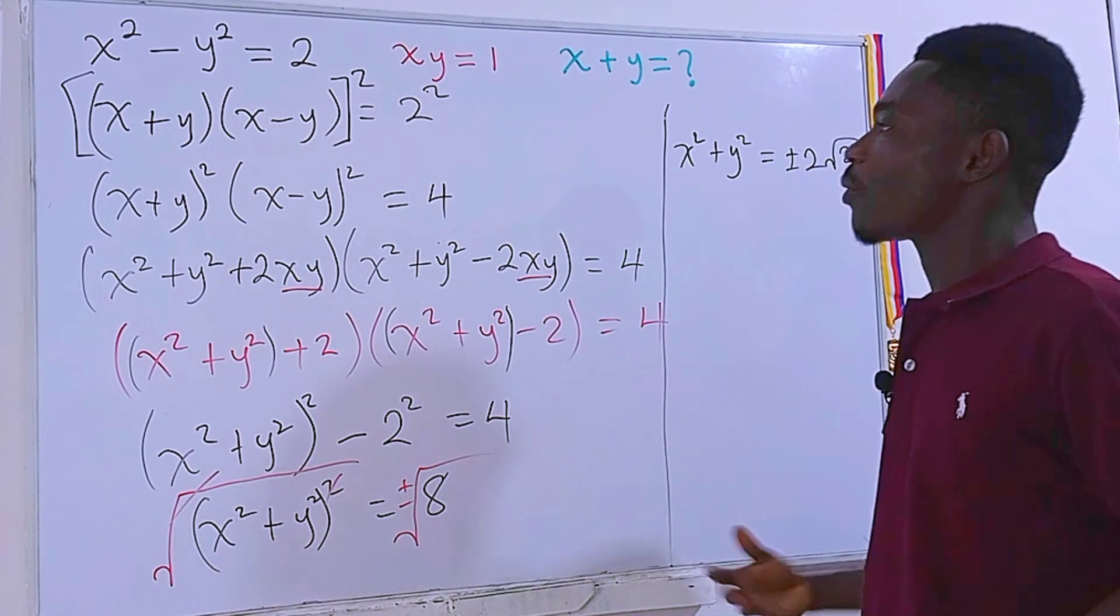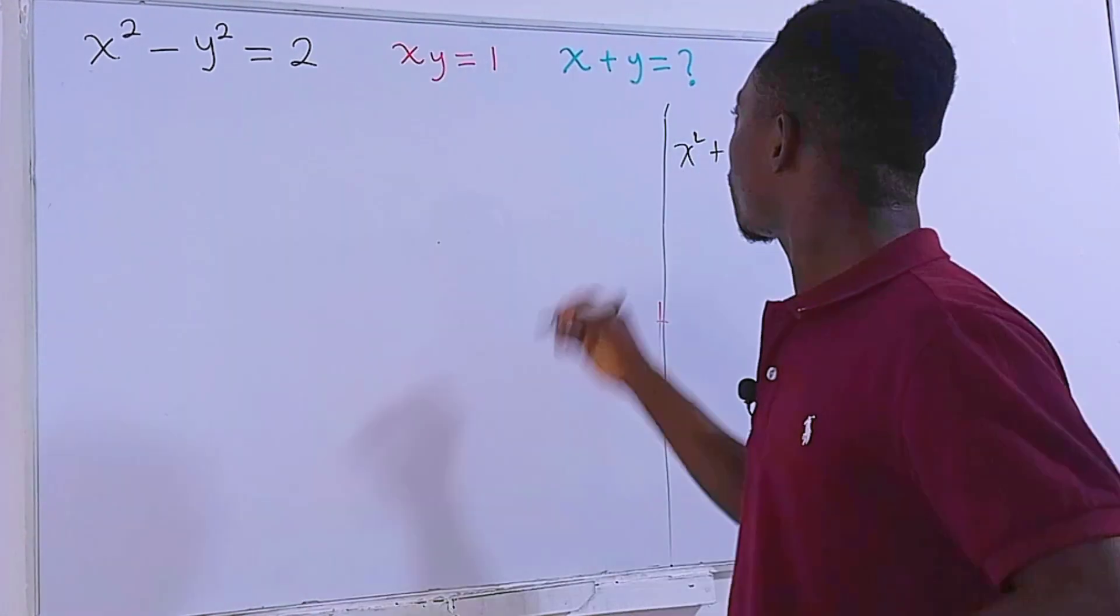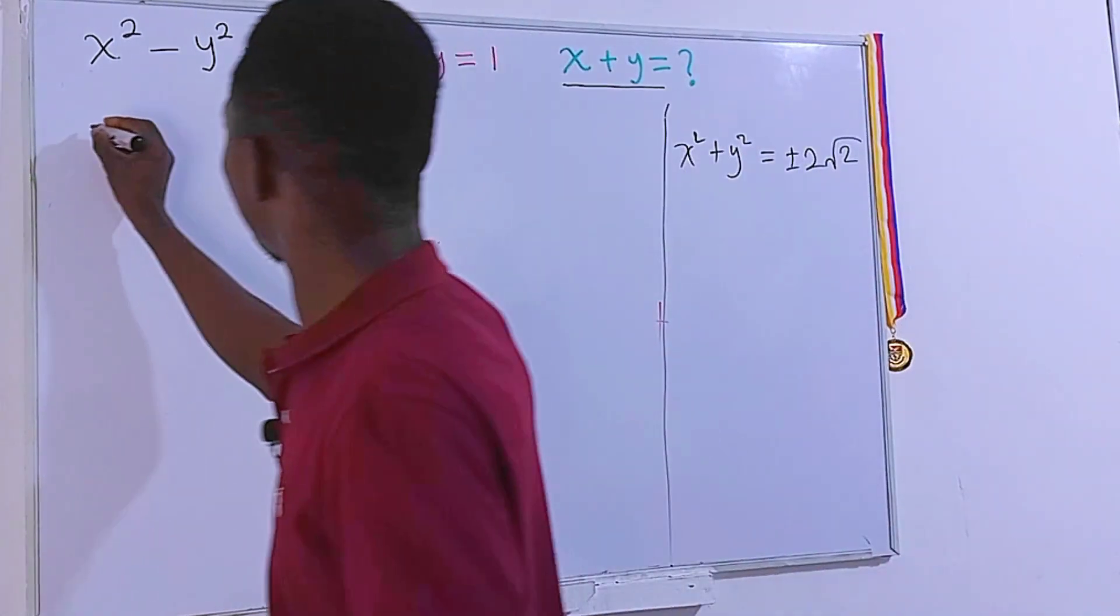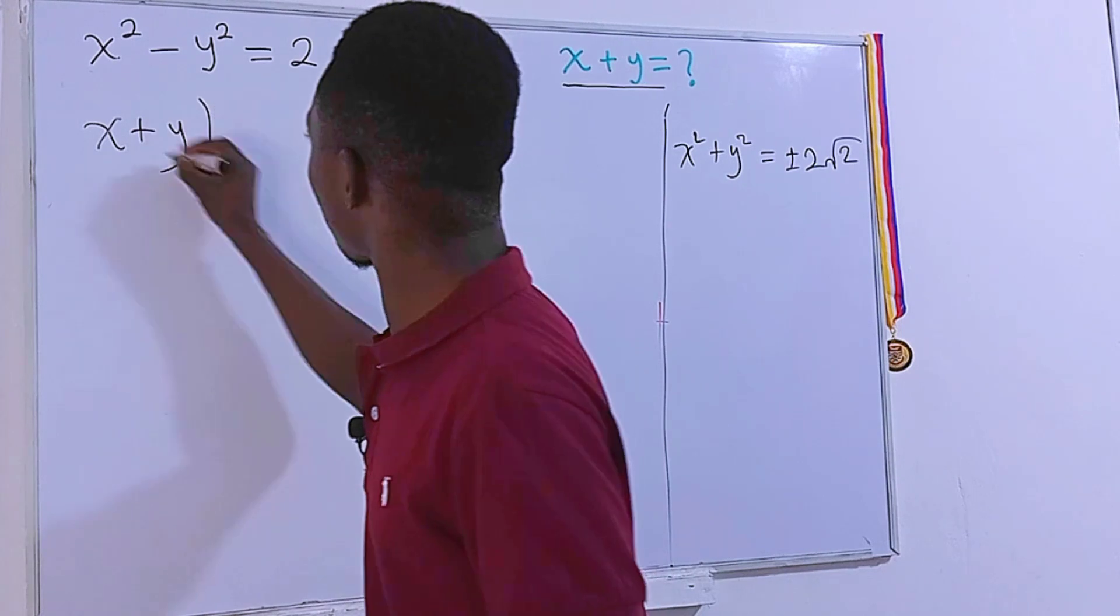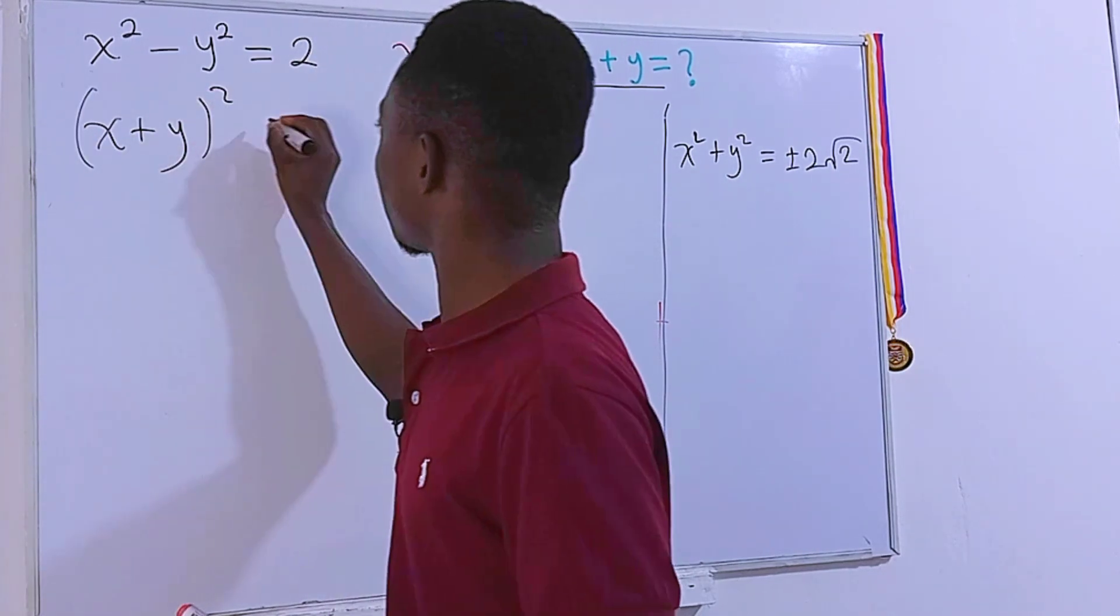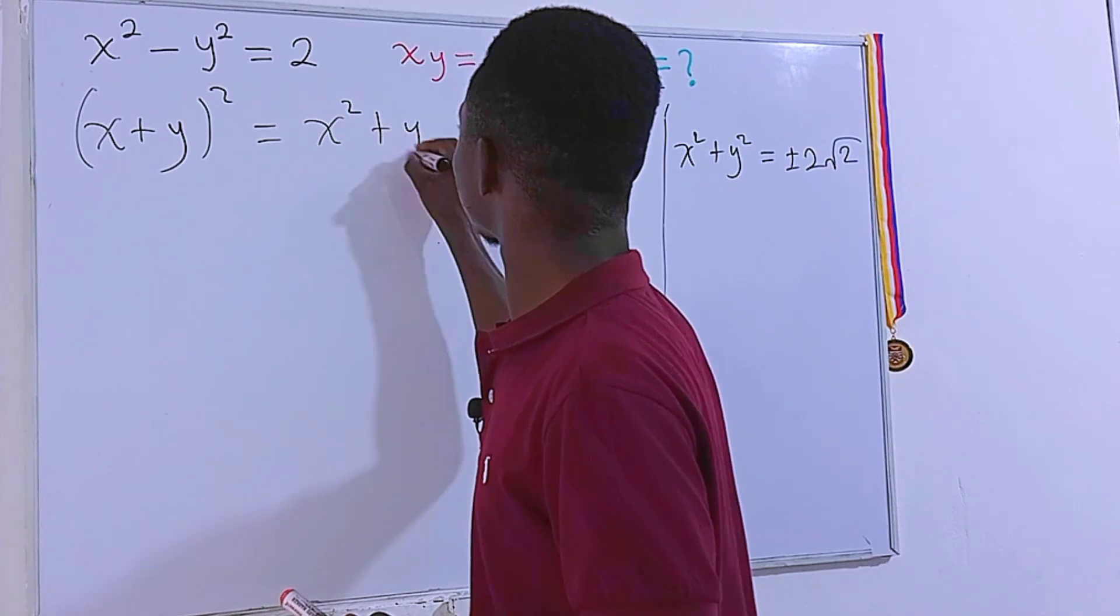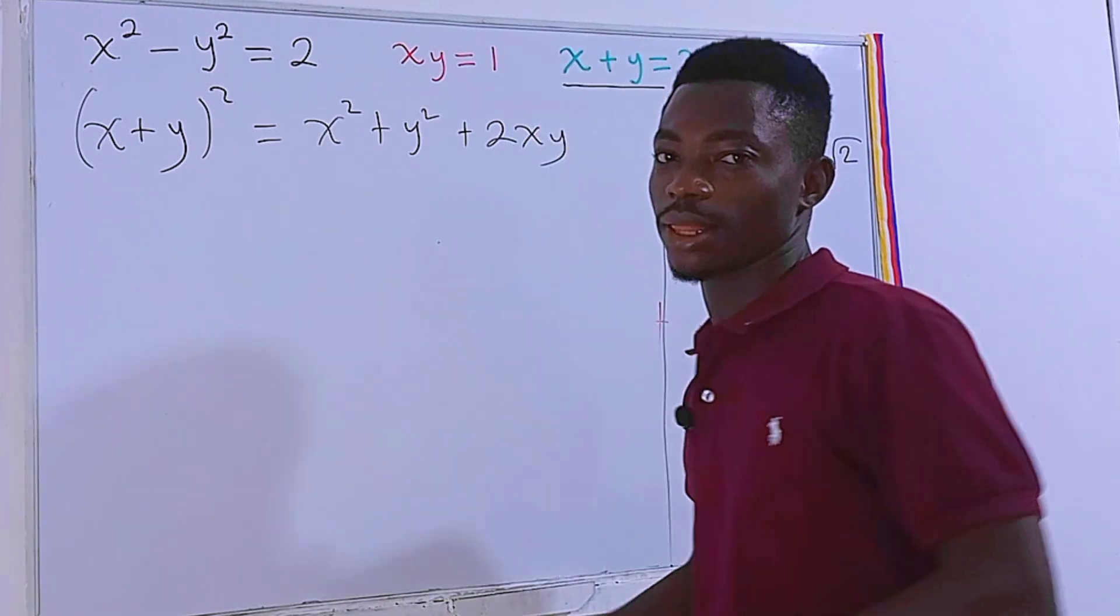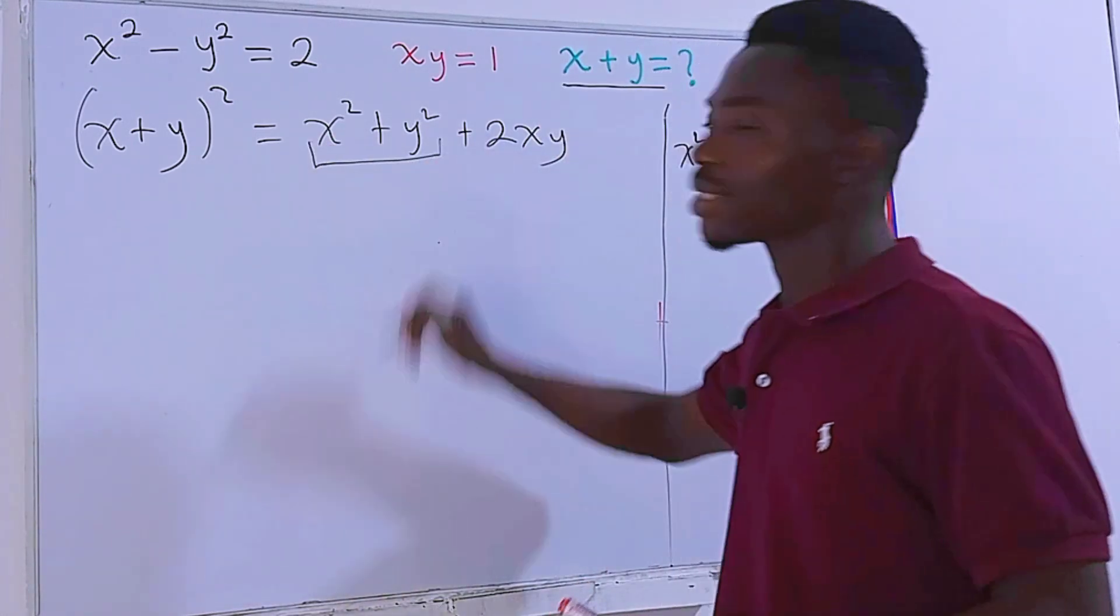Easy. I'm running out of space, so I'm going to get rid of this right here really fast. Now, remember, we are looking for x plus y. We have x plus y, which we are looking for. I'm going to square it like this. And if I expand this, I'm going to have x squared plus y squared plus 2xy, just like that.